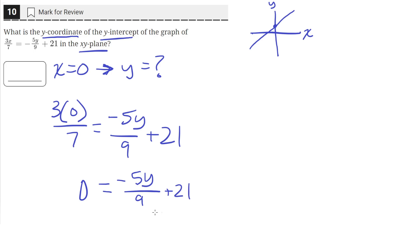So let's move the 21 to the other side by subtracting it from both sides. We'll have negative 21 on the left equals negative 5y over 9. We'll multiply both sides by negative 9.